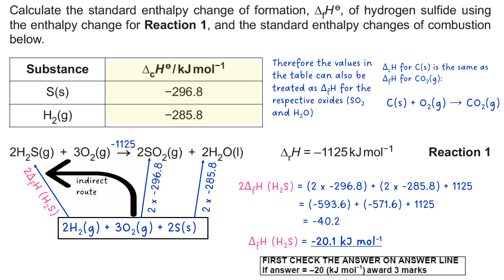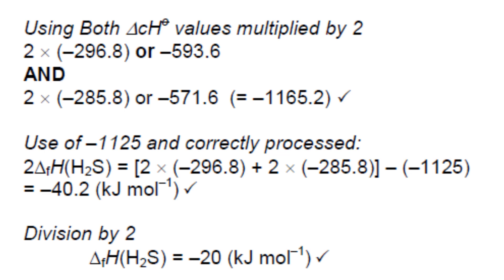So let's have a look at the mark scheme and see how they did it, fairly similar to what we did. You need to use both ΔcH values and multiply them up by 2. You need to use -1125 and correctly processed. So we did the +1125, which is the same as the minus minus there, and you divide it by 2 at the end, which gives you -20.1, which is -20 as they put.